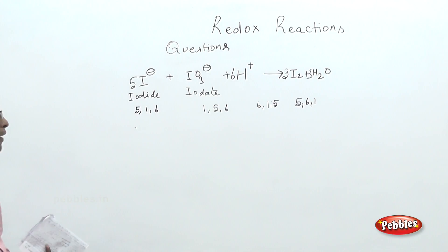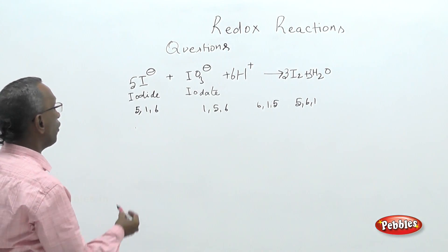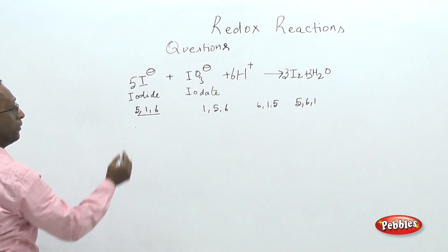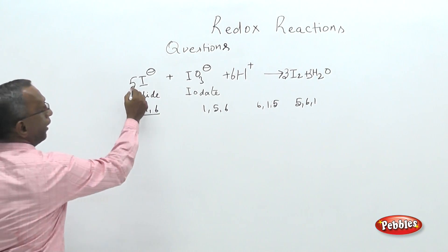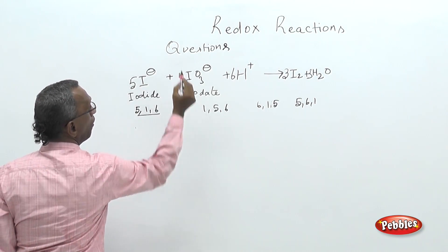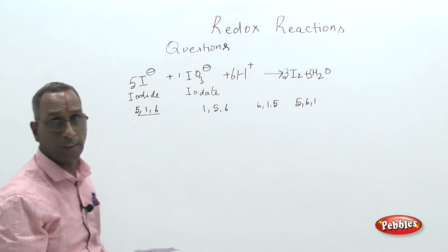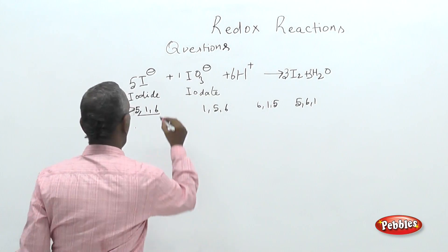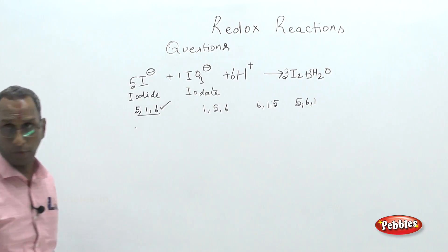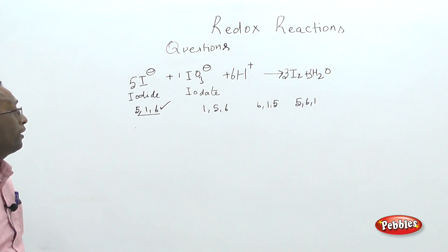This is the balanced equation: 5 moles of iodide combined with 1 mole of iodate in the presence of 6 protons gives 3 moles of iodine and 3 moles of water. The stoichiometric coefficients of the reactants are 5, 1, 6. The first choice is correct.